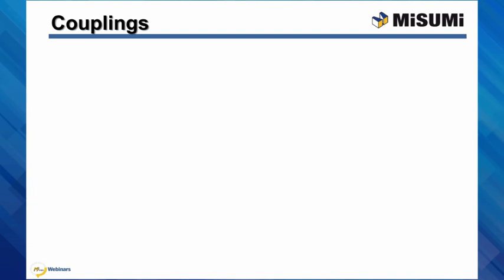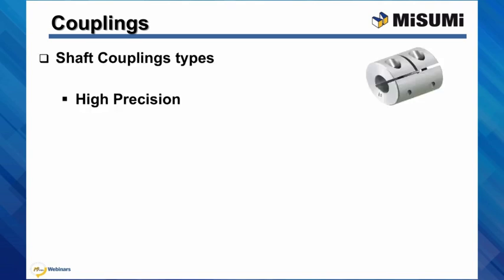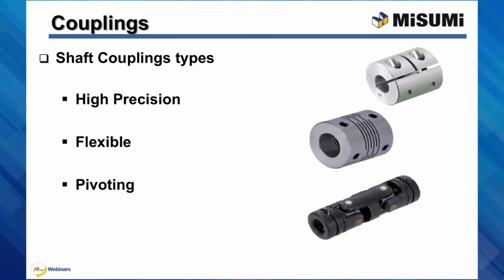In general, shaft couplings can be grouped into three groups: high precision, flexible, and pivoting couplings. High precision couplings tend to have higher stiffness and are suited to applications where shaft alignment is relatively good. Flexible couplings are better able to compensate for radial and angular shaft misalignment, while great misalignment calls for the use of pivoting couplings.